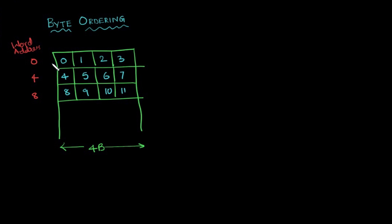If bytes are stored in this order where the starting byte address is from the left to right, then this is known as big endian scheme or big endian byte ordering.